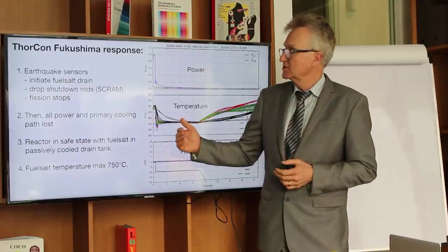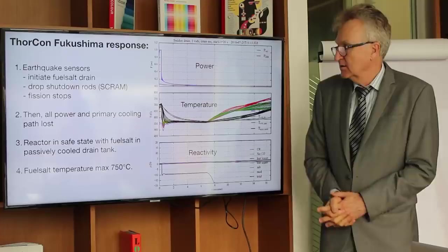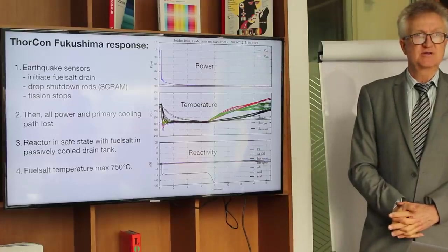For us, we had that same sort of scenario. The earthquakes would drop the shutdown rods and start draining. All fission would stop. We would lose the primary cooling, but now we're draining. The maximum salt temperature gets to 750 C, which is still below even where you start accumulating any creep damage. You're still within spec for what the stainless steel can tolerate.